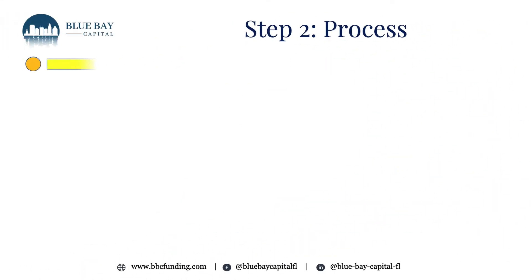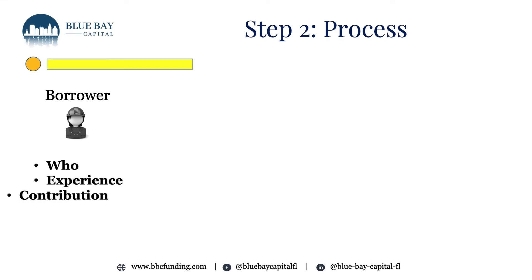Step two is processing. You can process a loan yourself or have your broker do it. There are three categories: the borrower, the property, and the project. For the borrower, you want to know who they are, what their experience is, how many like-kind projects they've done, how much capital they are contributing, and their ability to repay. Ability to repay is especially important if the borrower plans to hold the property as a rental and refinance your loan out. If they're fixing the property to sell on the open market, that sale is their exit strategy and their ability to repay.